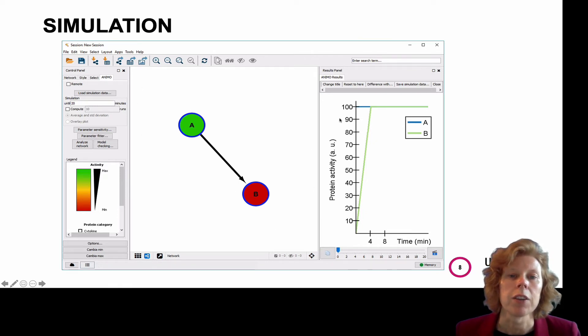If you do that, on the right, you will see the Animo results in an activity plot. And here you see A is given in blue, and it stays at 100%, and B quickly increases to 100%.